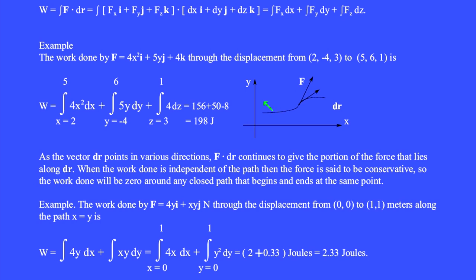The force vector points in different directions throughout space, and the differential path vector dr points in various directions, but F dot dr continues to give the portion of the force that lies along dr. When the work done is independent of the path, then the force is said to be conservative, and the work done will be zero around any closed path that begins and ends at the same point.